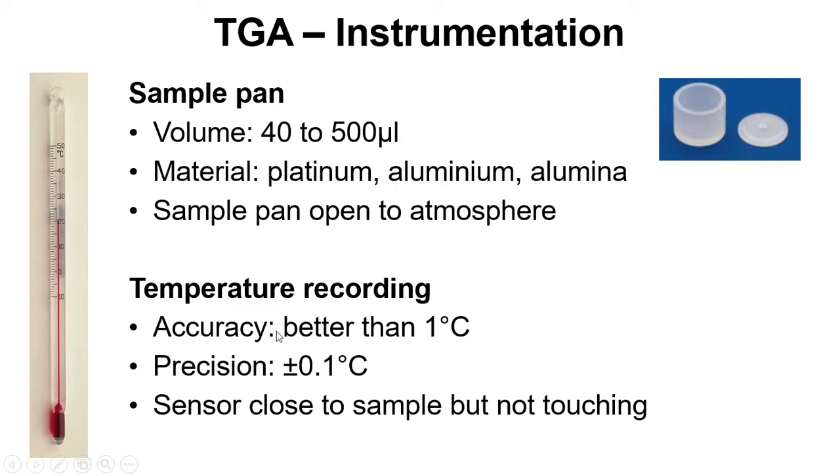Temperature recording accuracy is better than about 1 degree Celsius, with precision of ±0.1°C. As mentioned before, the temperature sensor is close to the sample but not touching it, and there's a couple of reasons for that.